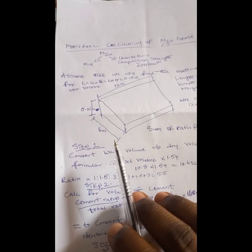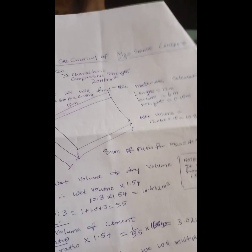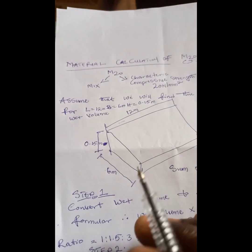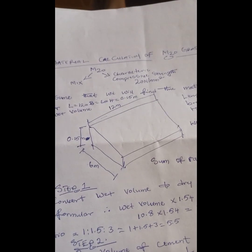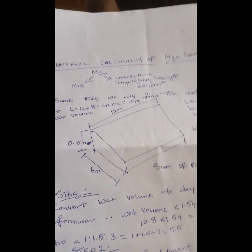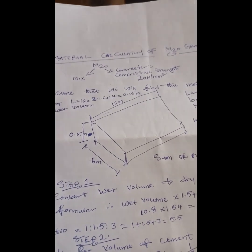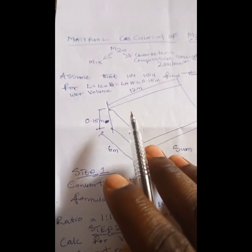Hi everyone, my name is Abel Grey Cantoma, I'm from Greatest Design Consult. Today I'm going to be showing you the material calculation of M20 grade of concrete. M20 — the M means your mix, and the 20 is the characteristic compressive strength, which is 20 Newton per millimeter square.